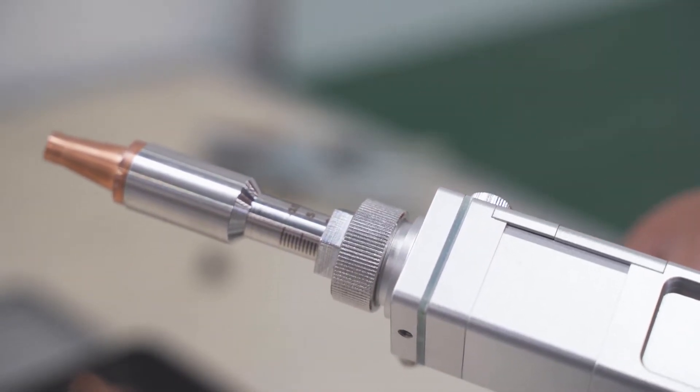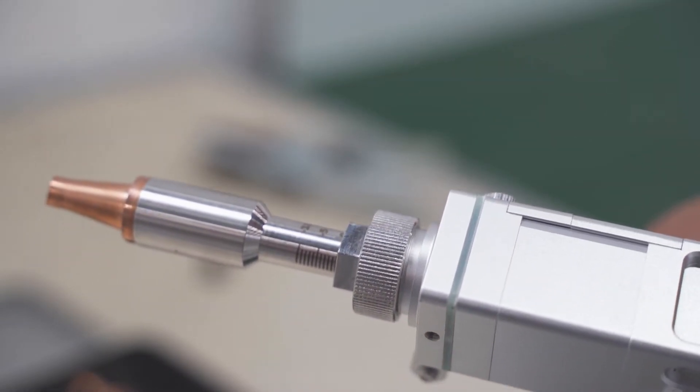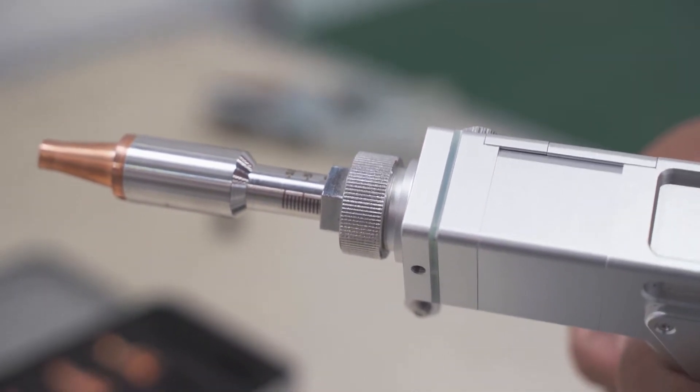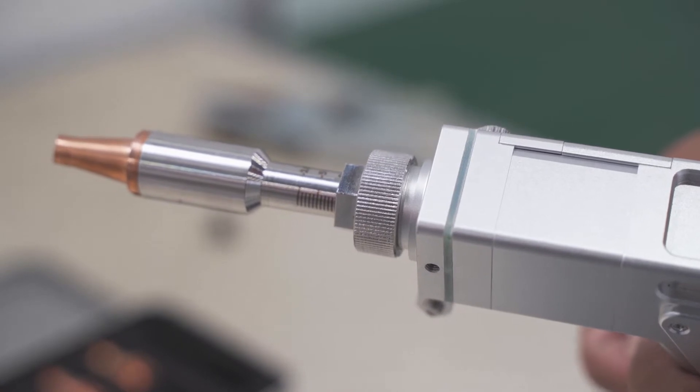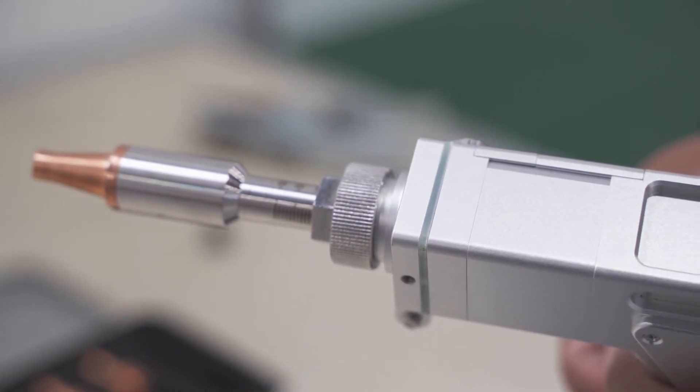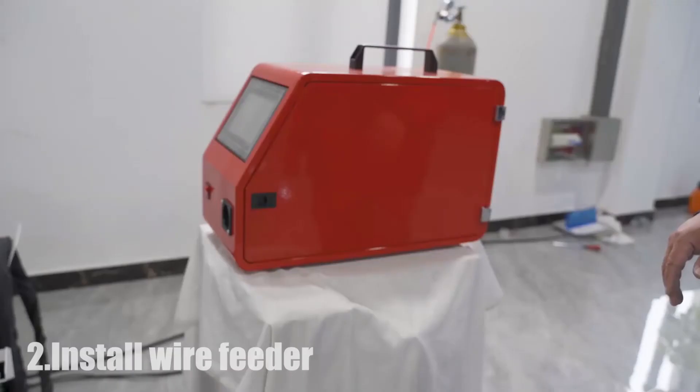You can see there are different lines on this metal tube. Generally, you will adjust it to zero. This means the focal distance from the laser gun to the metal parts.